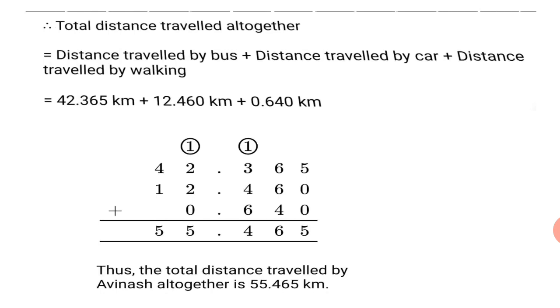Therefore, total distance traveled altogether is equal to distance traveled by bus plus distance traveled by car plus distance traveled by walking is equal to 42.365 kilometers plus 12.460 kilometers plus 0.640 kilometers. The addition is shown below. Okay, you add 5, 6 plus 6, 12 and 4, 16, 1 carry over. 6 plus 4, 10, 13 and 1, 14, 1 carry over. 2 plus 2, 4, 1, 5. 4 plus 1, 5. Thus, the total distance traveled by Abhinash altogether is 55.465 kilometers. So, first we convert them into kilometers and then add them. Okay, the sum is very simple. Do try to solve it on your own.